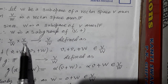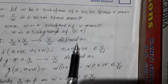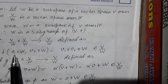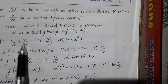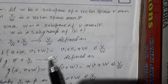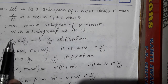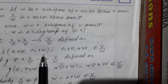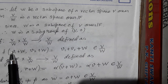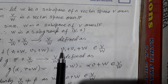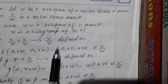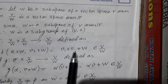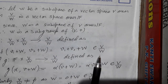So we have V/W × V/W → V/W. Any element here will be of the type V1 + W. We define the addition as V1 + W added to V2 + W equals V1 + V2 + W. Since V1 and V2 are elements of V, and V is closed under addition, V1 + V2 belongs to V, so the whole thing belongs to V/W.